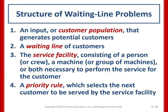The structure of waiting line problems consists of five components. The first is the input or customer population that generates potential customers. The second is the waiting line of customers. The third is the service facility — a person, crew, machine, or group of machines necessary to perform the service. The fourth is the priority rule — selecting the next customer to be served, such as first come, first served.